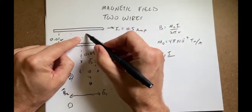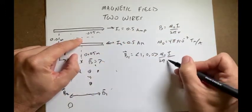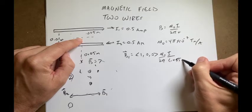Okay, so this is 0.005 meters plus 0.05. So this is going to be 0.055 meters.